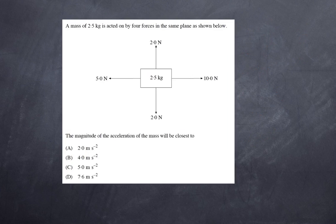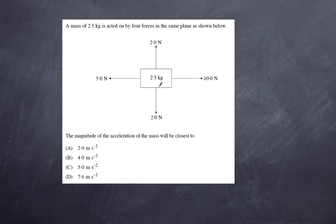Here's another question involving Newton's second law. Again we have four forces acting and we have to work out the magnitude of the acceleration. This is relatively simple because the forces are either vertical or horizontal, and we can treat them separately. The vertical forces cancel out, so there is absolutely no acceleration in the vertical direction because they are equal but opposite.